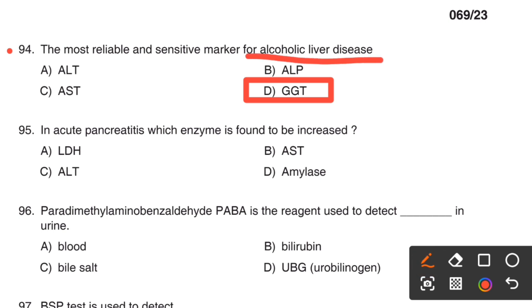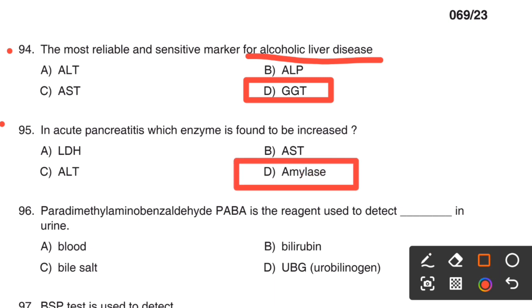Next one. In acute pancreatitis, which enzyme is found to be increased? Option A, LDH. Option B, AST. Option C, ALT. Option D, Amylase. The right answer is Option D, Amylase.